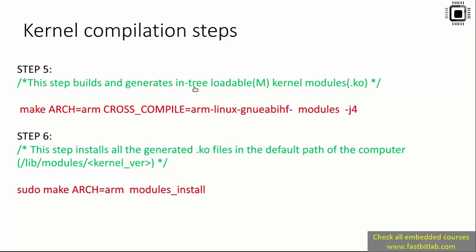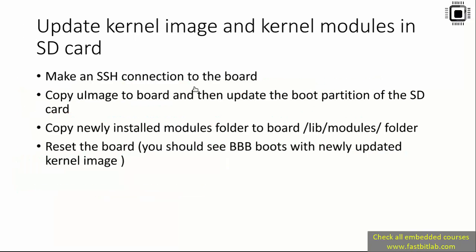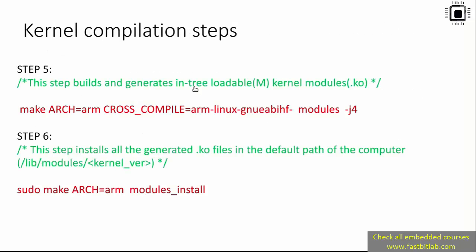Step five is building loadable modules — use the command 'modules' to build the kernel modules. After that, install the generated modules using the command 'modules_install', which installs all generated .ko files into the default path on the computer. After that we have to update the kernel image. Let's head over to the command prompt.